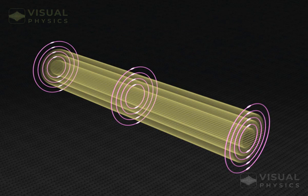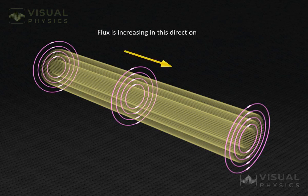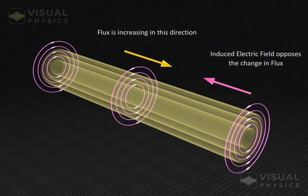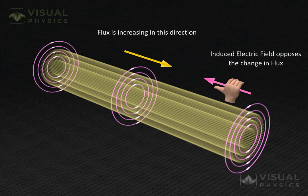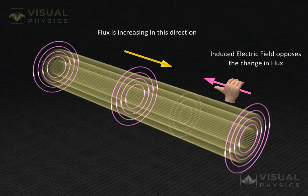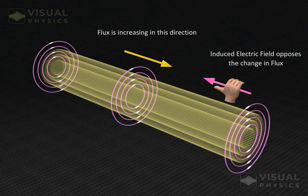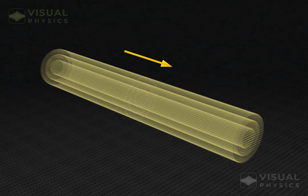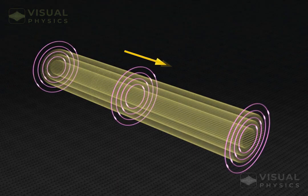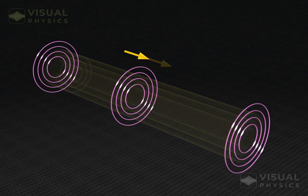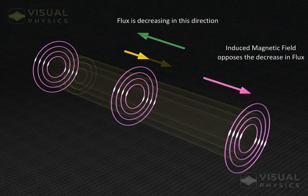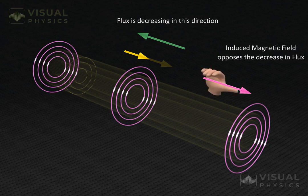Direction of induced electric field is similar to the direction of induced current in a coil placed in this magnetic field. So for an increasing magnetic field in this direction, induced electric field will be as shown. And for a decreasing magnetic field, it will be as shown.